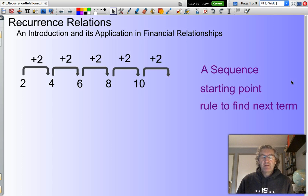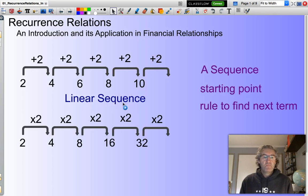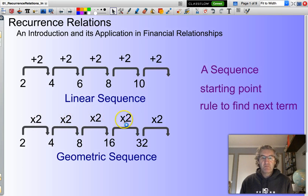Now a sequence can be thought of as a number pattern with rules that define each term. You can see here the two number patterns we'll be looking at in particular will be a linear sequence where each term increases or decreases by the same amount, or what's known as a geometric sequence where we multiply each term by the same value.